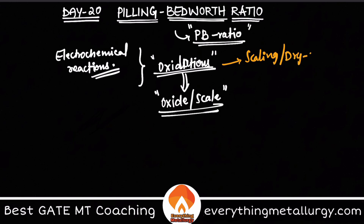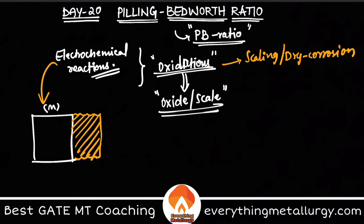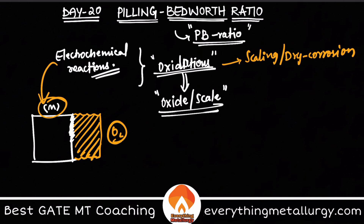This is called oxidation, also called scaling or dry corrosion. Let's say I have a metal M — there will be some oxide layer formed over it. How is it formed? Through an electrochemical reaction: there is a transfer of electrons from the metal and the atmosphere of oxygen, which drives the oxidation reaction to take place at this particular surface.